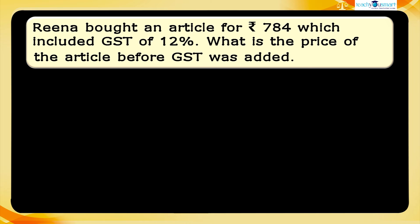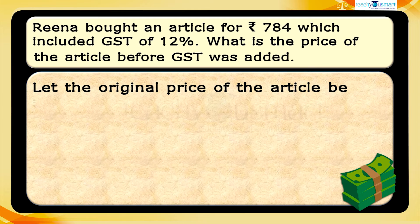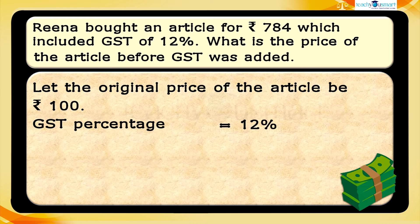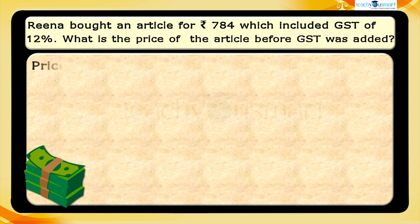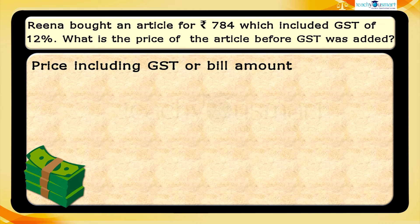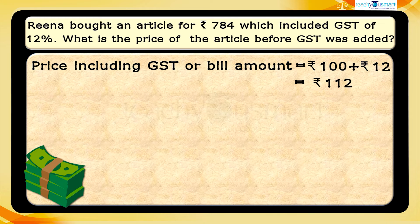Let the original price of the article be 100 rupees and the GST percentage equals 12%. So the GST amount is 100 × 12 ÷ 100 = 12 rupees. Then the price including GST, or the bill amount, is 100 + 12 = 112 rupees.